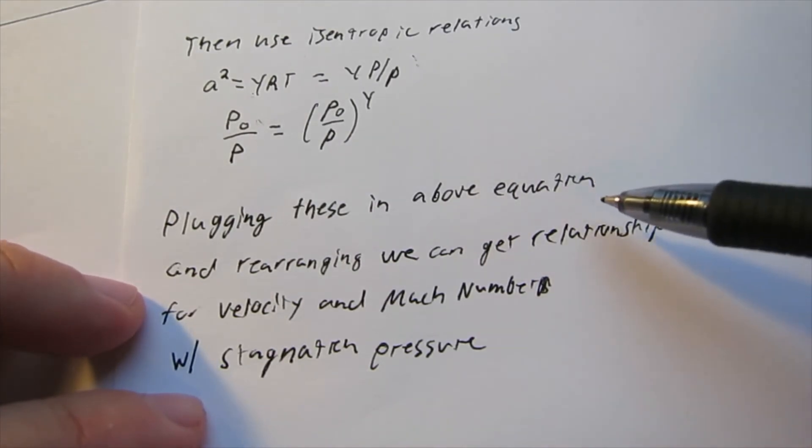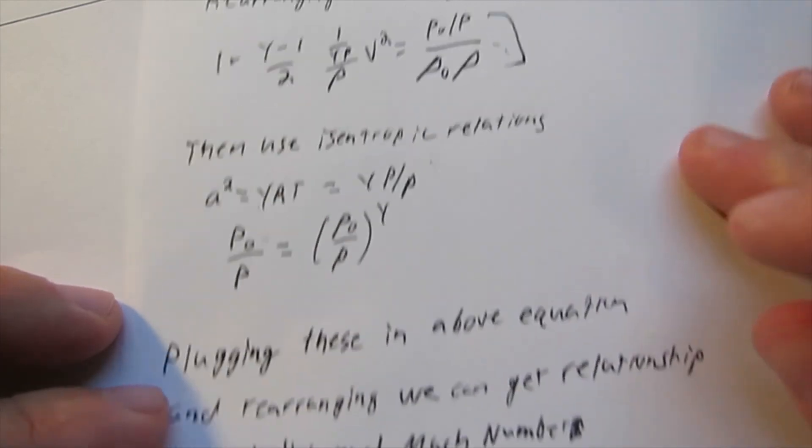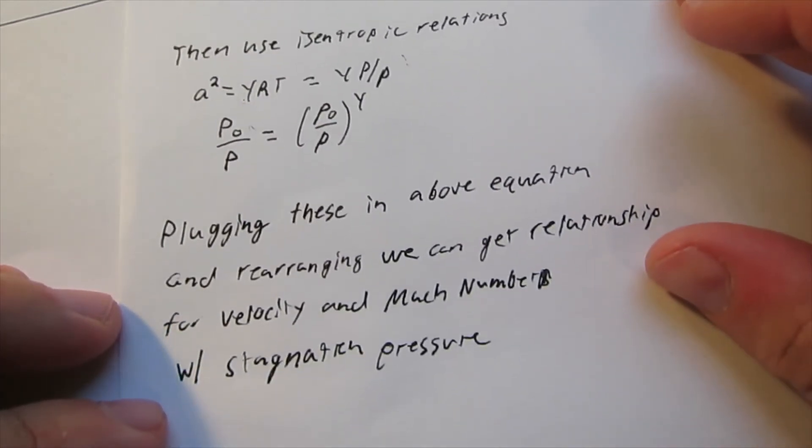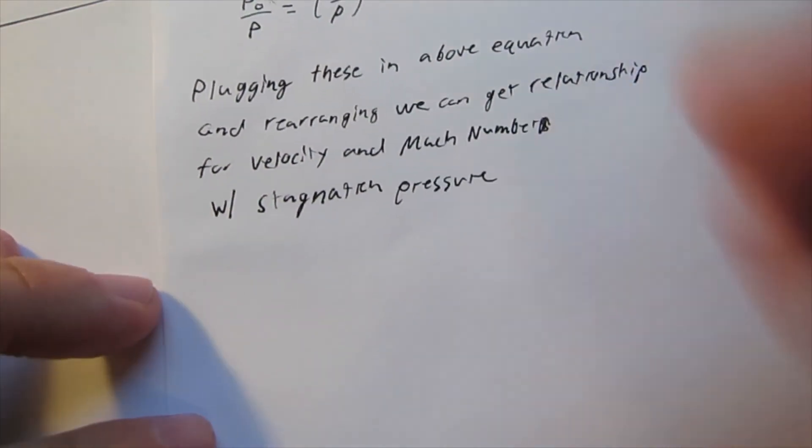So plugging in the above equation, which is here, so plugging these into this equation, we can get the relationship for velocity and Mach number with the stagnation pressure.